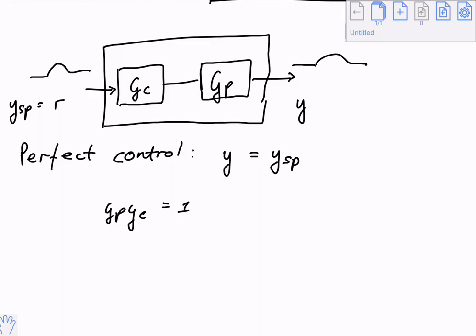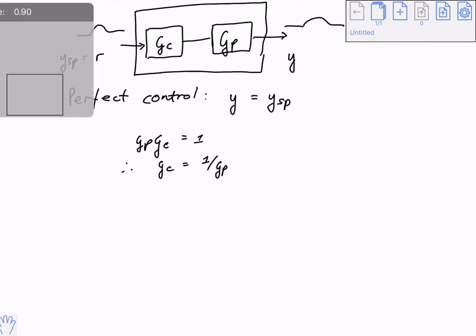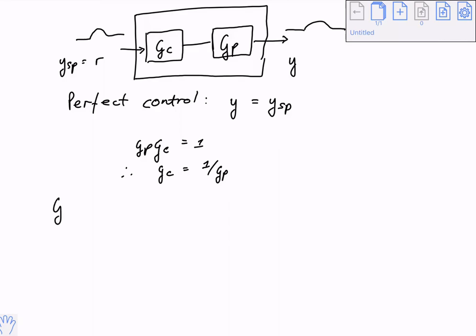Problem solved — or so it seems. I have a system; if I have the inverse of the system available, that inverse will tell me exactly what to do with my manipulated variables to achieve the output I want. For example, if gp equals 2 over (3s + 1) — just a first-order transfer function — then gc equals (3s + 1) over 2. And then my job is done. The only thing is, I just have to build one of those.